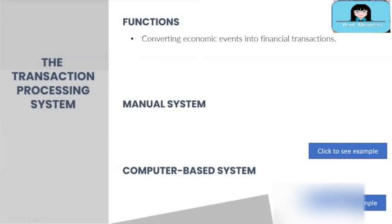TPS converts economic events into financial transactions. If an event is a financial transaction or a non-financial transaction that will trigger financial transactions in the future, TPS captures the relevant data of that particular event. For example, for sales orders sent by a customer, the relevant data collected include customer number, customer name, shipping address, order date, item price, and total amount.